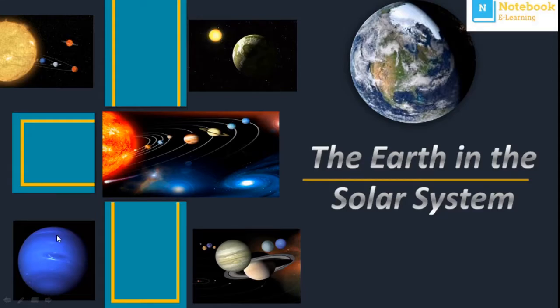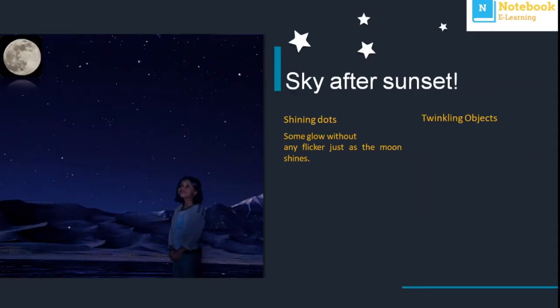Hello everyone, welcome to Notebook E-Learning. In this video lesson we are going to see the very first chapter of Class 6, which is about the Earth in our solar system. Before starting, have you ever observed the sky during the day? What did you observe? Did you observe that the sun shines brightly, and when it's evening, numerous dots of light illuminate the night sky?